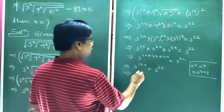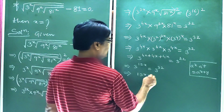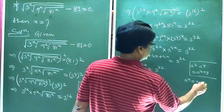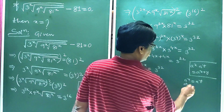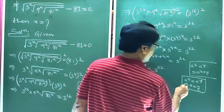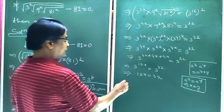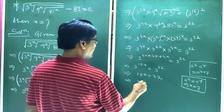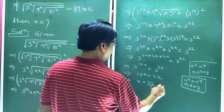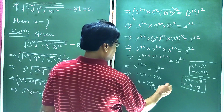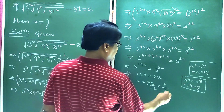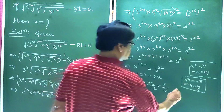And this implies 12x is equal to 32, because if a to the power x is equal to a to the power y, then x is equal to y. We have applied this formula here. So this implies x is equal to 32 by 12, which simplifies to 8 by 3. Answer.